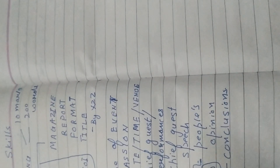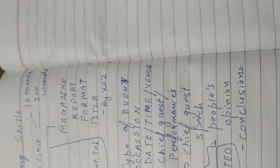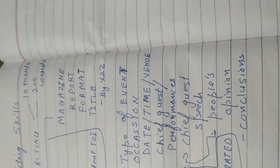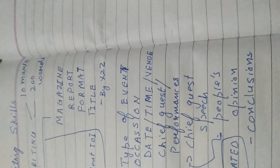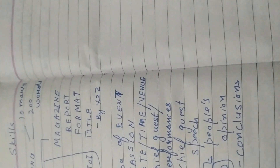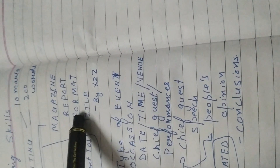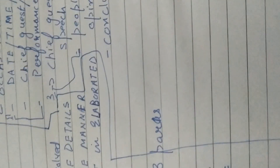Now comes the second category: magazine report writing. You must have read such reports in your school magazine — any function or assembly that happens, we report it. You are quite familiar with this kind of writing. This report has a title and the reporter's name, but does not include a designation. It is also divided into three paragraphs.